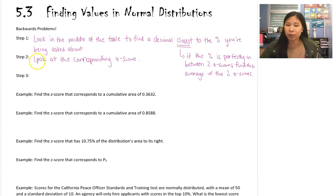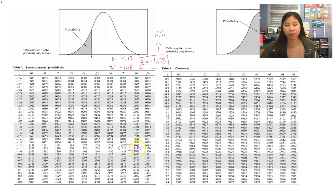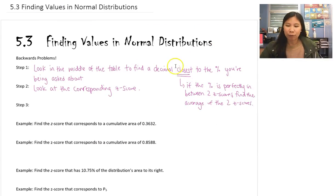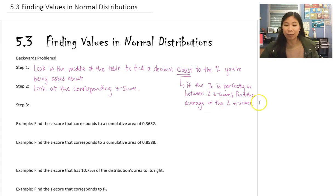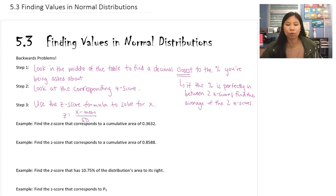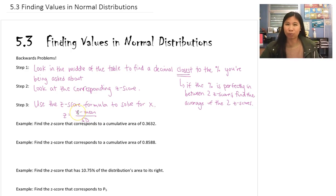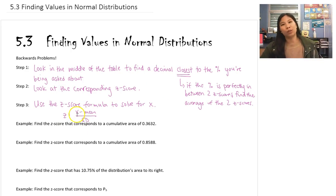Coming back to our steps: Step 2 is to look at the corresponding z-score — wherever you're closest to your percent in the table, see what z-score that matches. If there's no single closest value because two are equally distant, find the average of those two z-scores. Finally, Step 3: if you're solving for x, use the z-score formula — z equals x minus the mean divided by the standard deviation — plug in the z-score, mean, and standard deviation, then use algebra to solve for x.